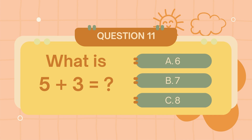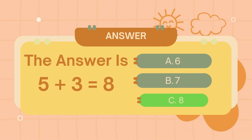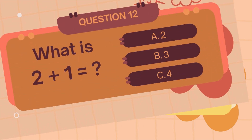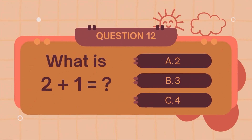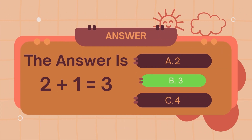What is 6? What is 5 plus 3? The answer is 6. What is 5 plus 3? The answer is 7.